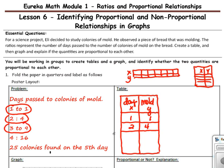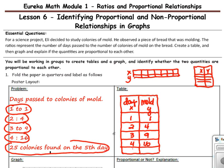Three days, nine colonies of mold. Four days, 16 colonies of mold. And 25 colonies on the fifth day. Five days, 25.